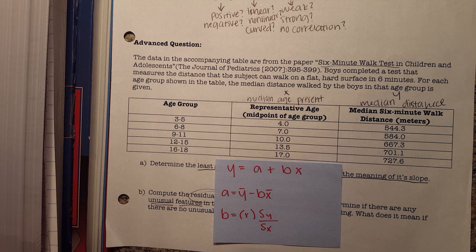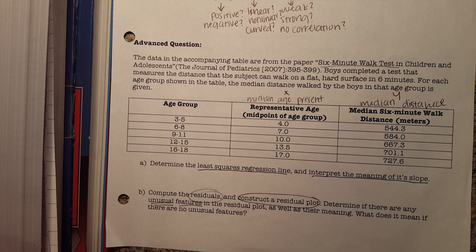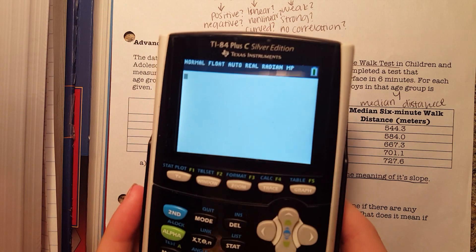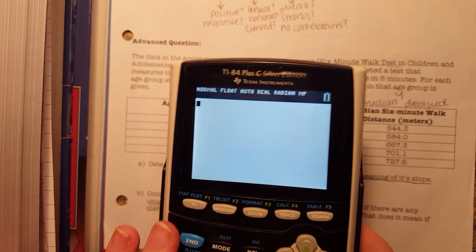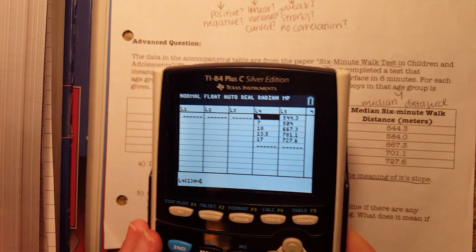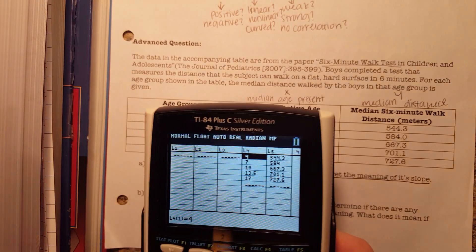We aren't given enough information, nor do we have enough time to figure that out by hand, so we're going to do it with the calculator. In the calculator, we're going to start with stat edit and type in this information. I already have it typed into list 4 and list 5.